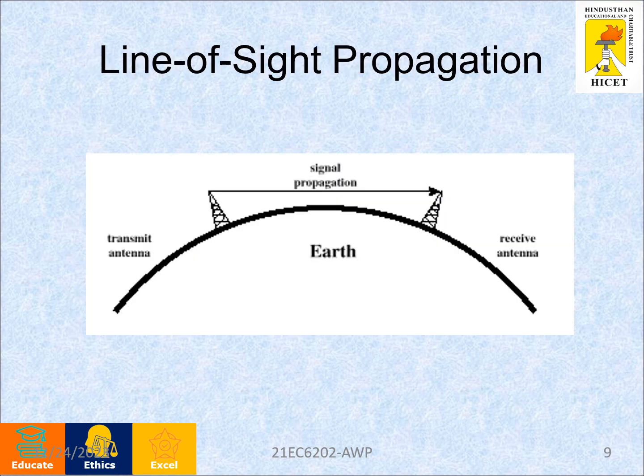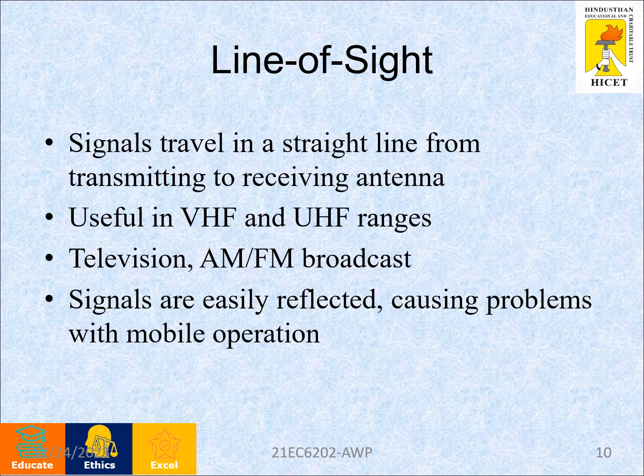The next one is line of sight propagation, which is nothing but space wave propagation. Let us assume this is the curvature of the earth. This is the transmitting antenna and this one is the receiving antenna. The signals travel from the transmitting antenna directly to the receiving antenna with no obstacles in between — that is line of sight propagation. The signals travel in a straight line from transmitting to the receiving antenna. This is useful in ultra high frequency and very high frequency ranges. Television, broadcast, AM, and FM are examples of line of sight propagation.